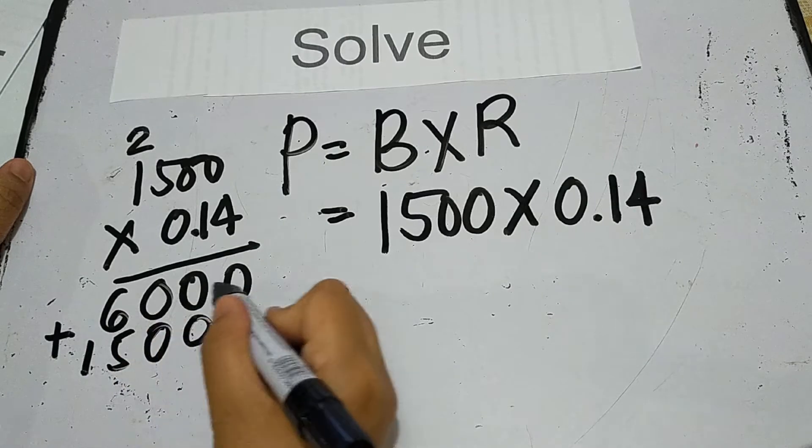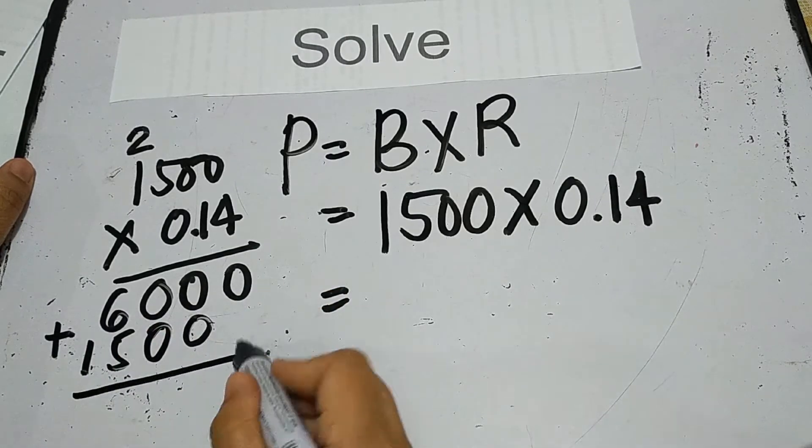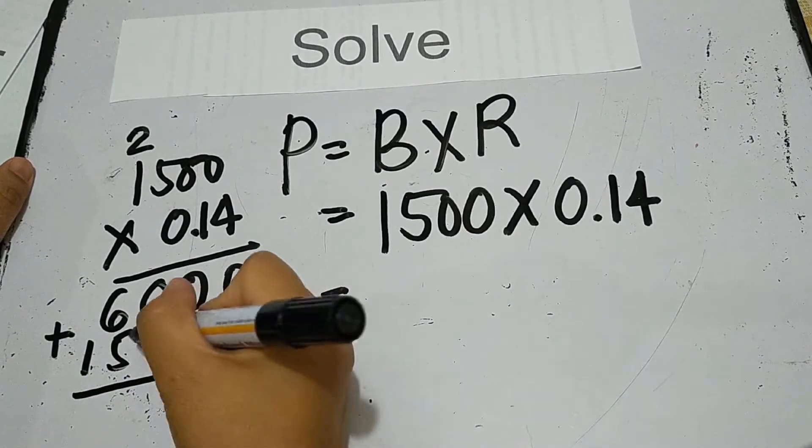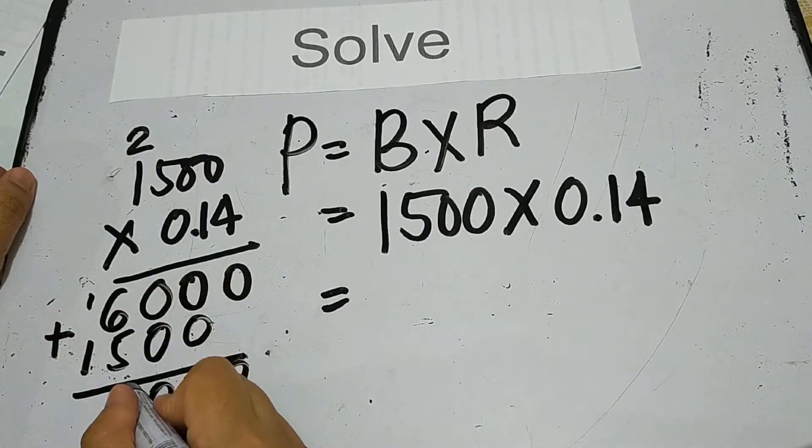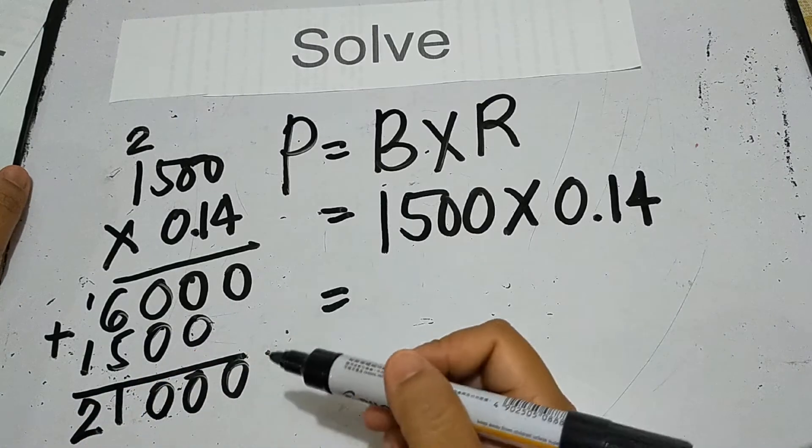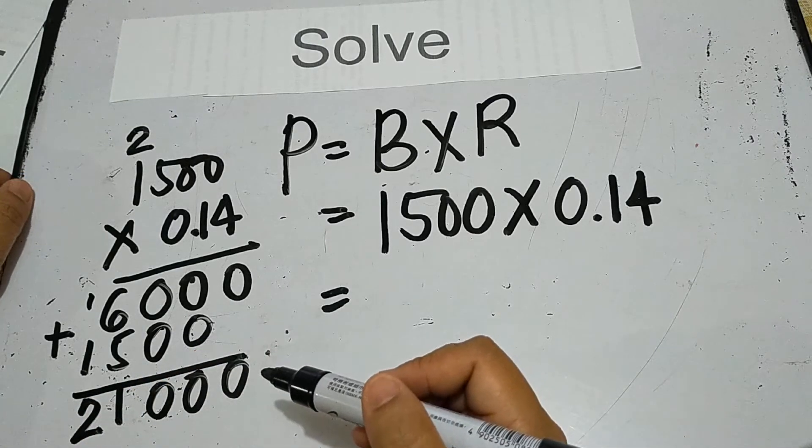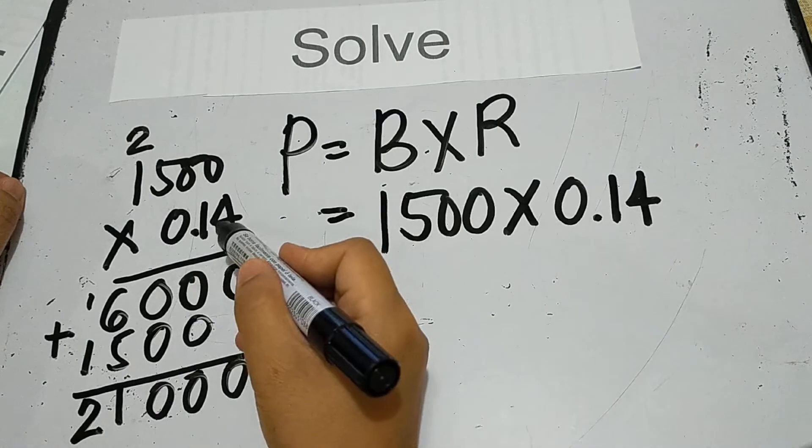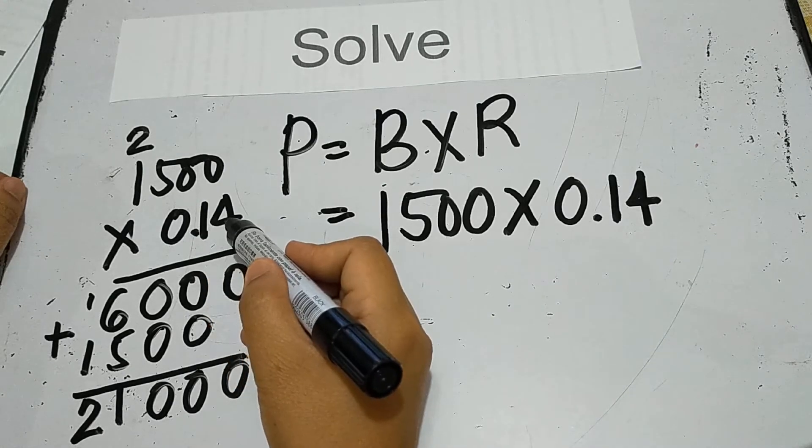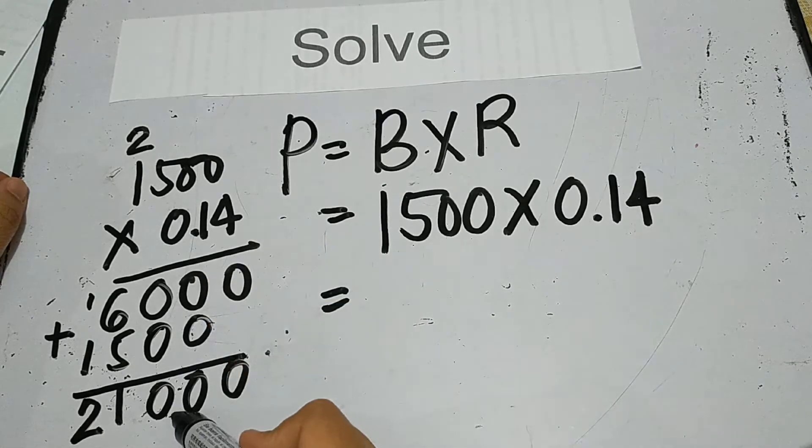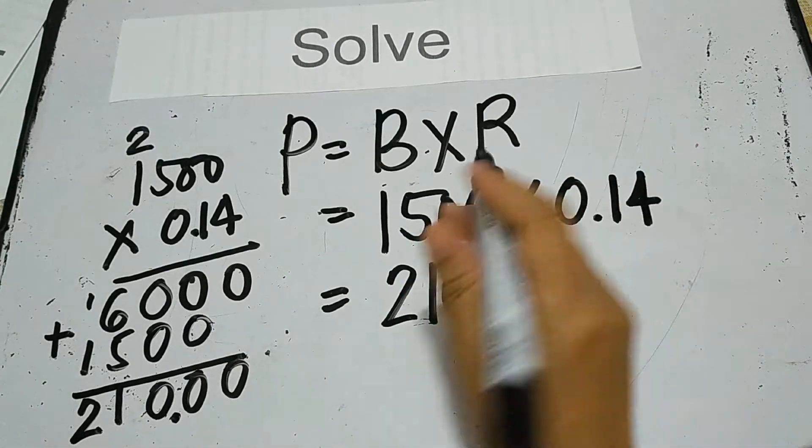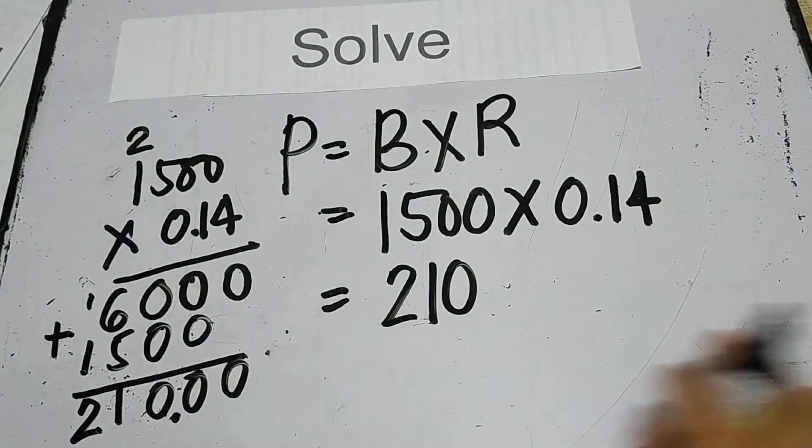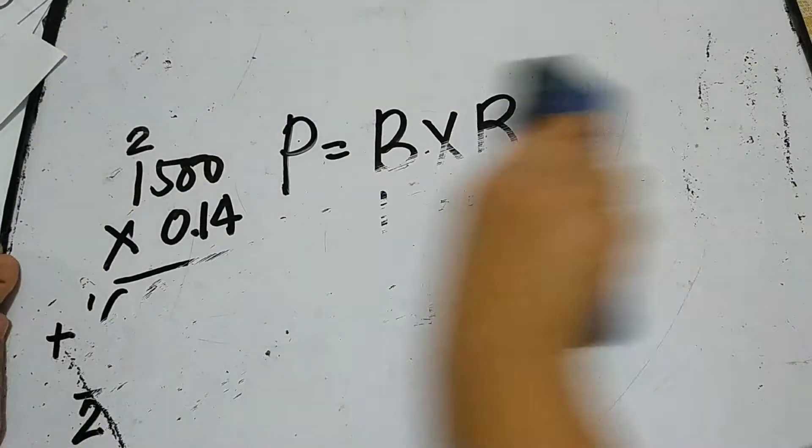Let's add the first partial product to the second partial product. Bring down 0, 0, 0. 6 plus 5 is 11, 1 plus 1 is 2. Count the number of digits to the right of the decimal point: 1, 2. The answer is 210.